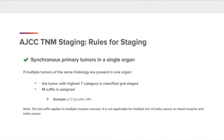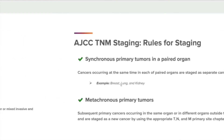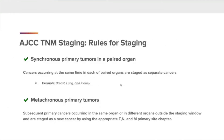Synchronous primary tumors in a single organ: if multiple tumors of the same histology are present in one organ, the tumor with the highest T category is classified in stage, and the M suffix is assigned. For example: pT2(m), pN0, cM0. Note: the M suffix applies to multiple invasive cancers — it is not applicable for multiple foci of in situ cancer or mixed invasive and in situ cancer. Synchronous primary tumors in a paired organ: cancers occurring at the same time in each paired organ are staged as separate cancers. Examples of paired organs would be breast, lung, and kidney.